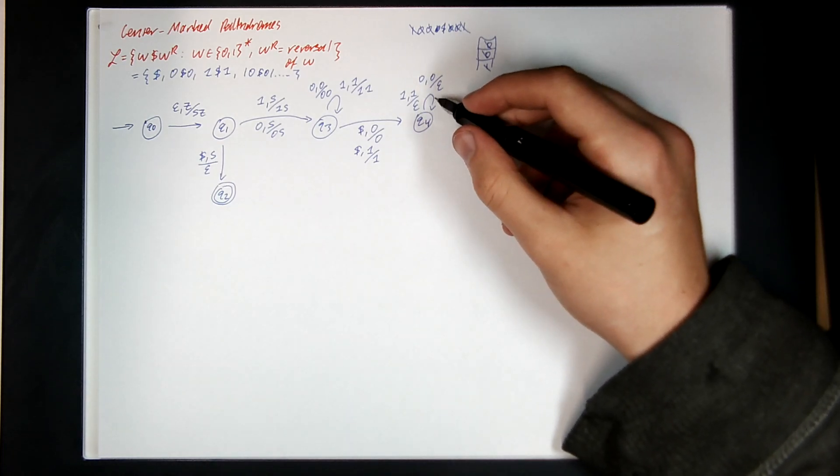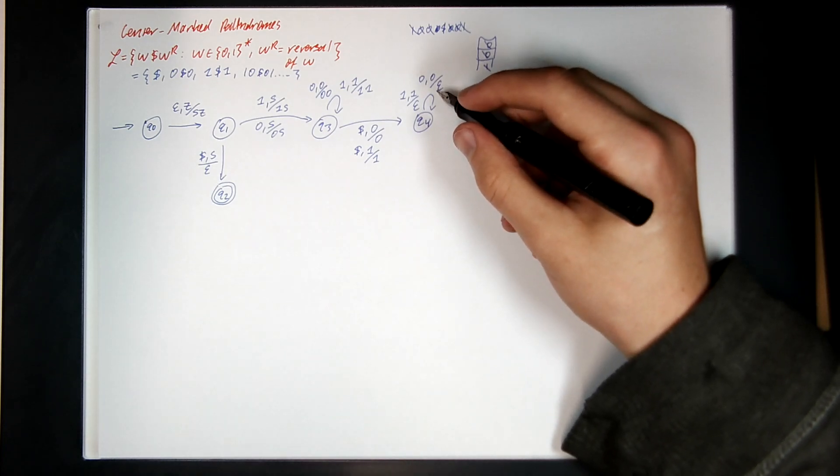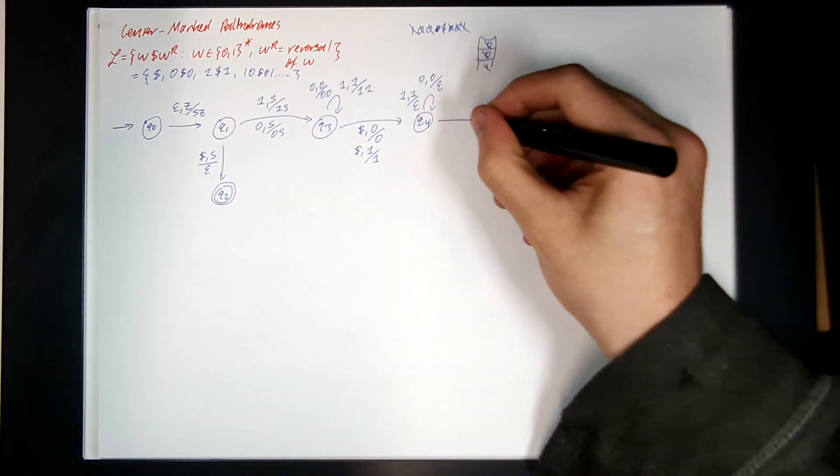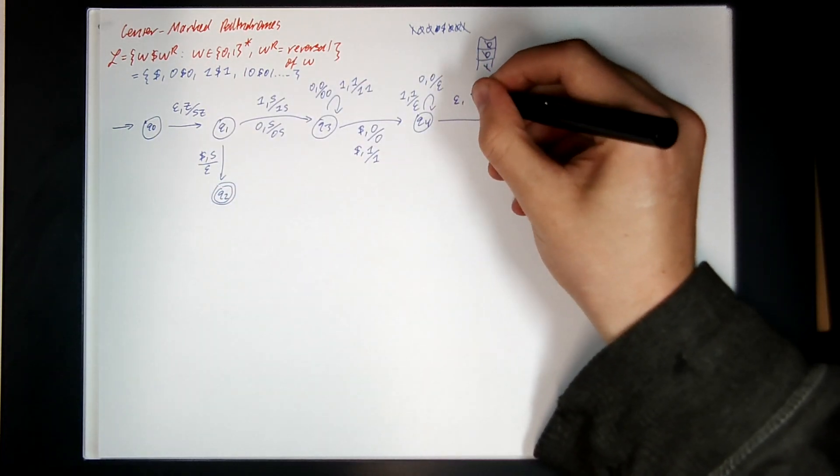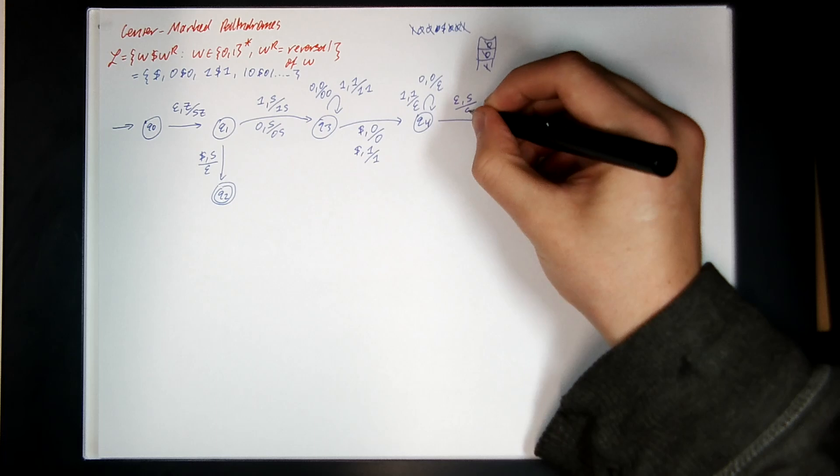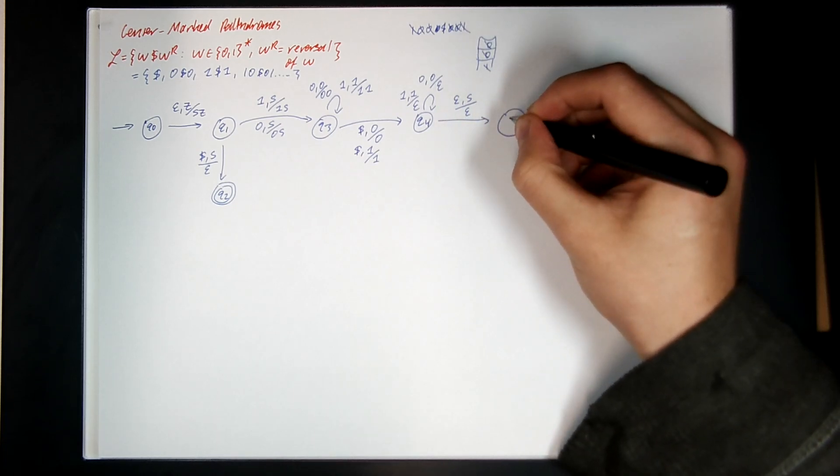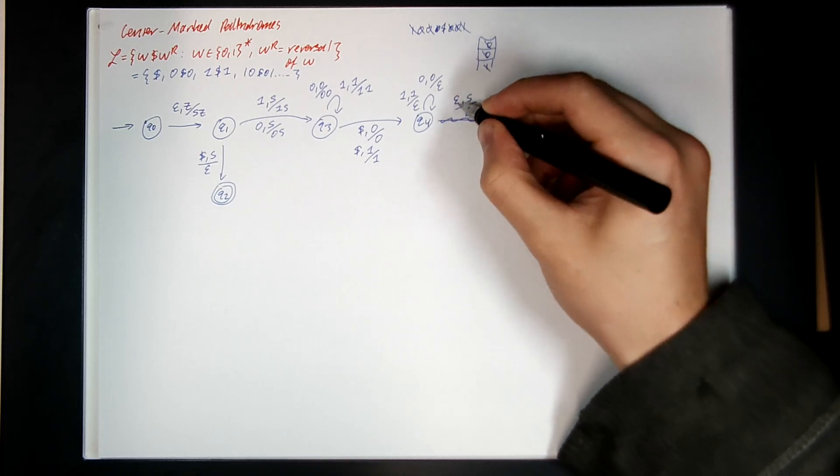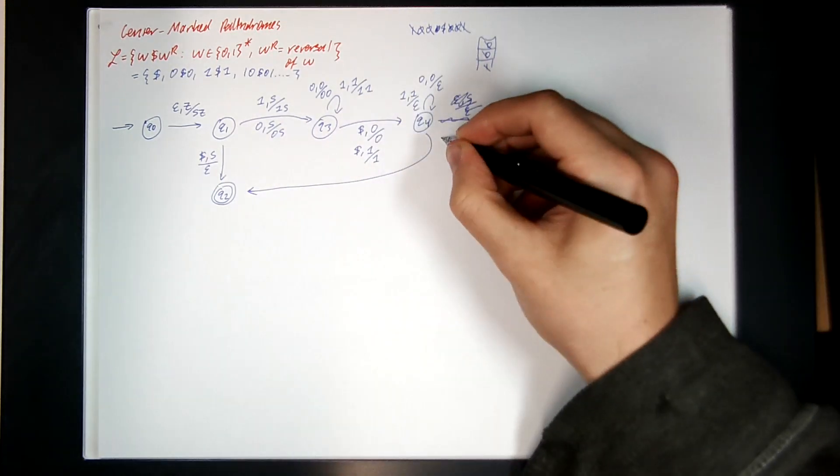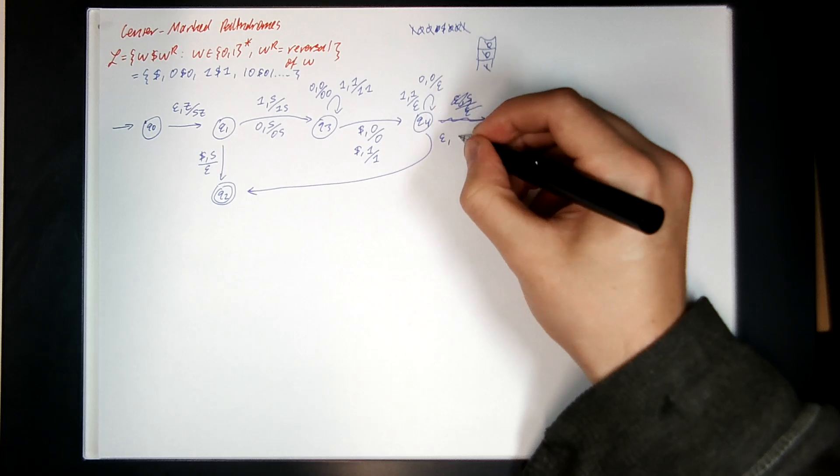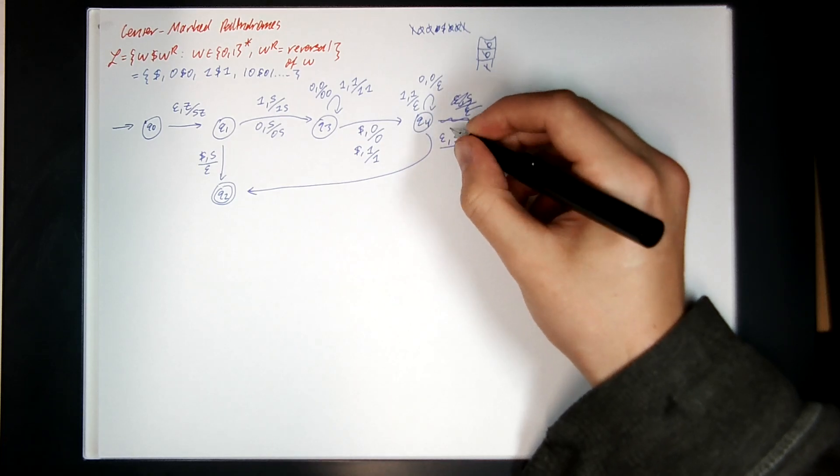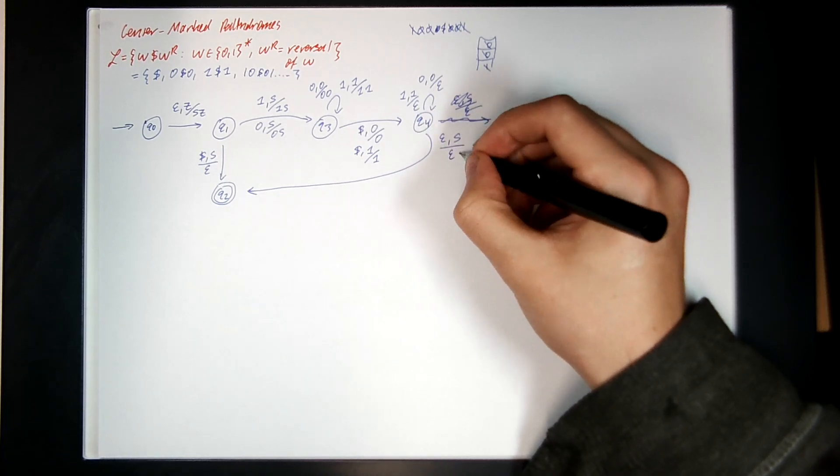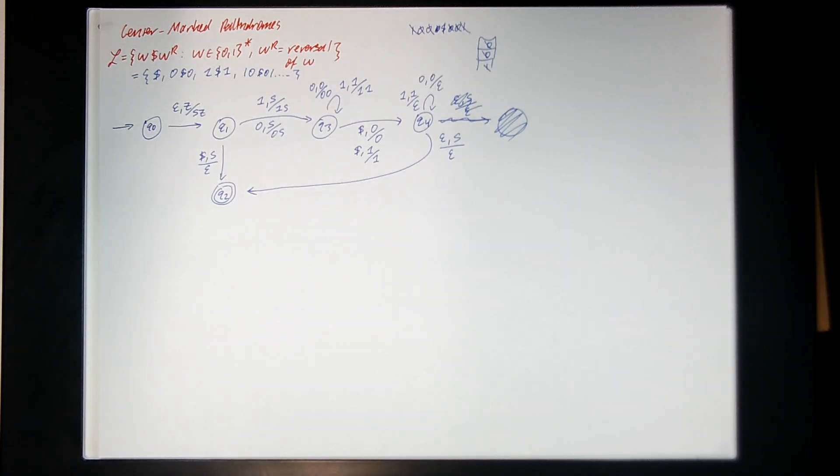All right, and then what else? Right, when do I accept? When the input is empty and I see S. The input is empty and I can see S. Eat the S and then go to an accepting state Q5, or really go back down to Q2, I guess. So, see, consume no input, C empty, stack S, eat the S and then go to Q2. There we go.